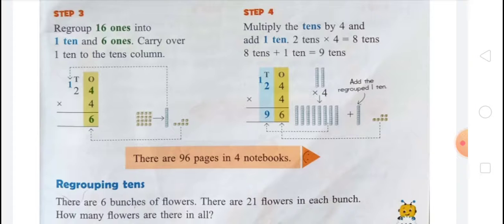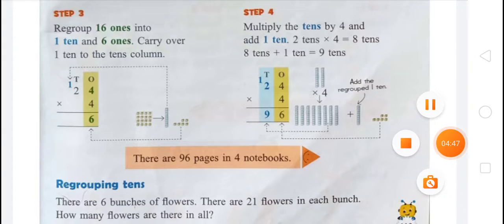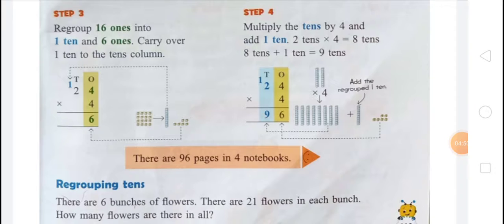So 4 times 24: there will be 6 in the ones place and 1 will carry. The answer is 96. So there are 96 pages in 4 notebooks.